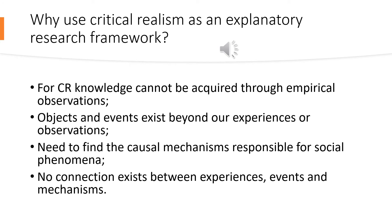For critical realists, to acquire knowledge about the world we cannot rely simply on empirical observations, because objects and events exist independently of our knowledge of them. For critical realists, there is no direct connection between experiences, events and mechanisms, because mechanisms might only be experienced indirectly through their effects, or not experienced at all. Like in our example of the falling leaves, gravity cannot be observed, yet its effect has a real impact on objects. Meanwhile, it is not always windy nor rainy, and the shapes of the leaves can vary, and trees might have leaves they do not shed.